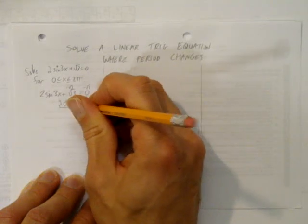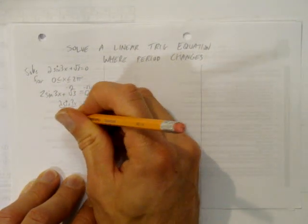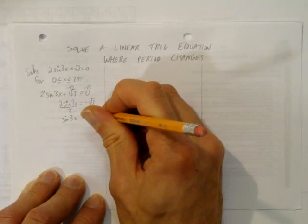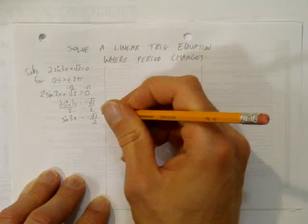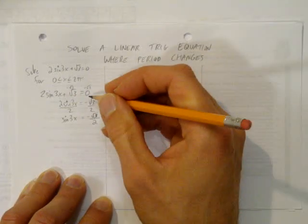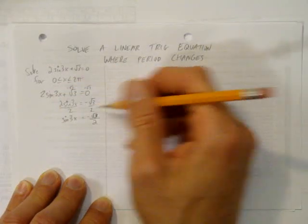Now we can divide both sides by 2, and we're left with sine of 3x equals negative root 3 over 2. What I did here was undo the linear operations, that is this plus root 3 and this times 2. I moved them over with inverse operations to get the question to look more familiar.